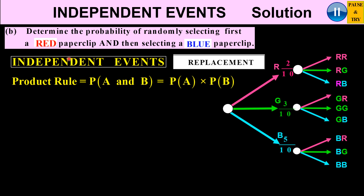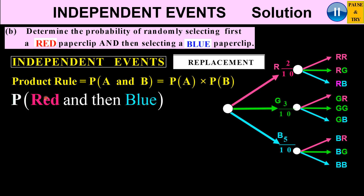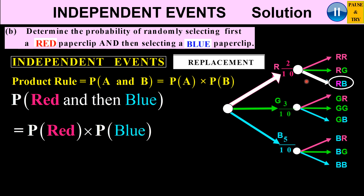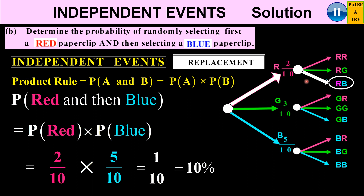We want the probability of selecting first a red followed by a blue. I'm going to use the product rule because they are independent events — A will be red and B will be blue. Following red then blue along the tree diagram, the probability is 2 over 10 times 5 over 10, which gives 10 over 100, which is 1 over 10, or 10%.